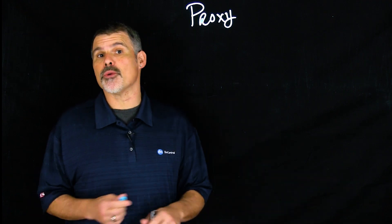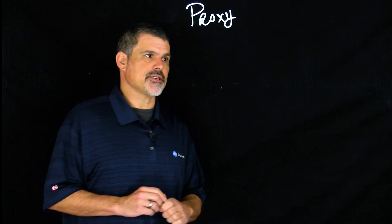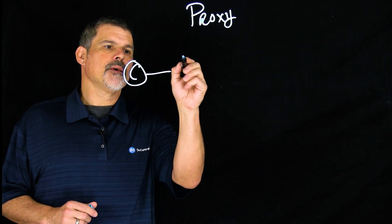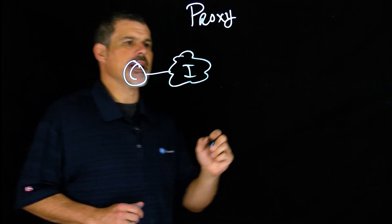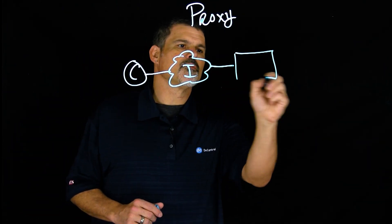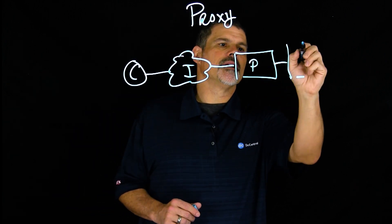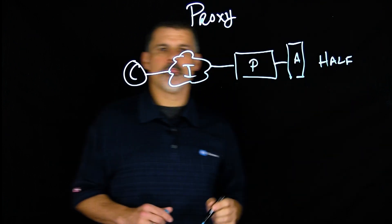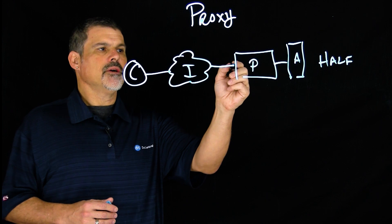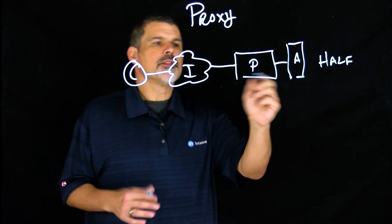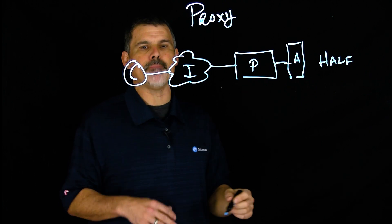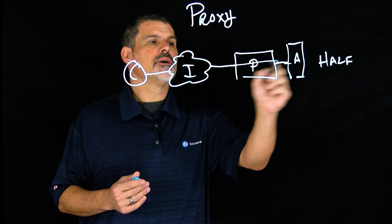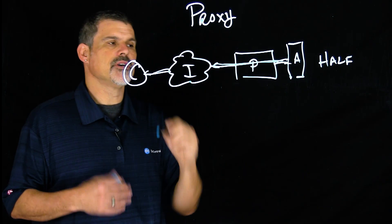So the first kind of proxy we're going to look at is a half proxy. We have a client here, our infamous internet cloud, the proxy, and then our applications. In a half proxy, the client will connect to the proxy. The proxy will then establish a connection to the applications, the resources on the back end. The resources will respond, and then the proxy will pass back that response to the client.